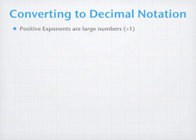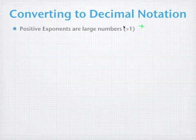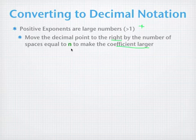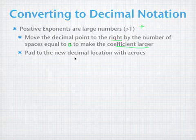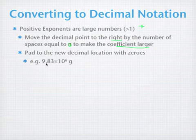How do you convert from scientific notation to decimal notation? Remember: positive exponents are large numbers — positive is big. We move the decimal point to the right, because we want to make the coefficient larger, moving it n — that exponent number — of decimal places to the right. You may need to pad with zeros. So for 9.83 times 10 to the 6th grams, here's our decimal point and n equals 6: we move 6 spots to the right.